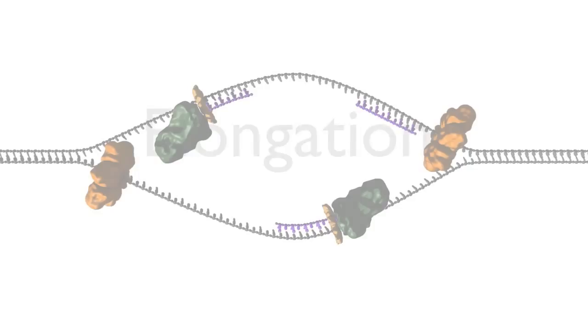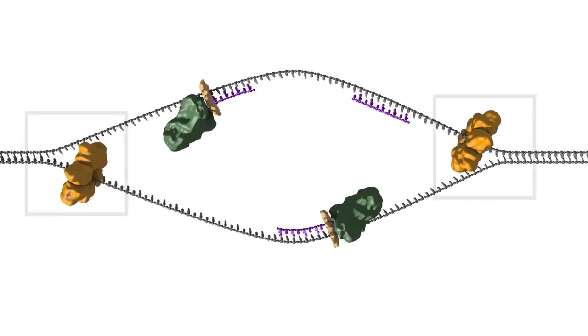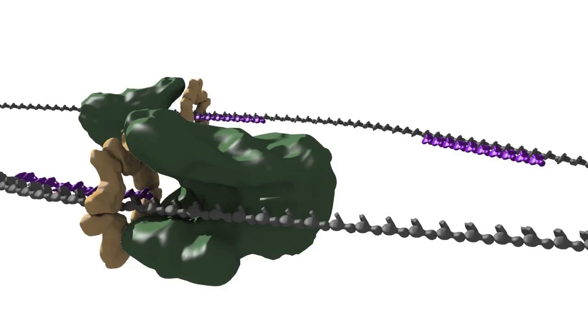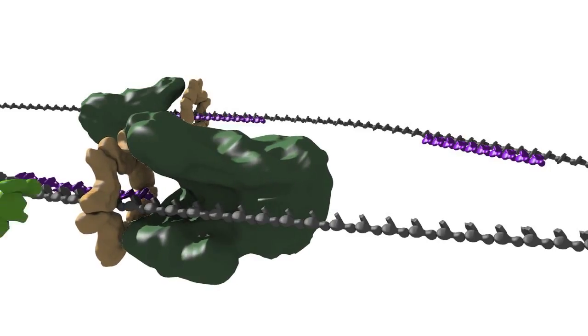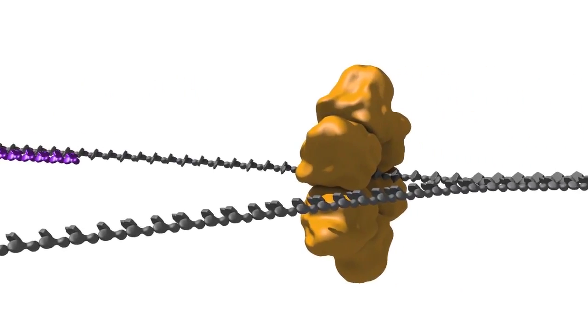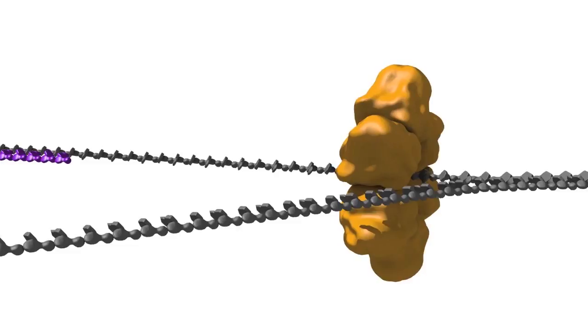During elongation, the replication bubble gets bigger as the helicases move apart, establishing two replication forks that move in opposite directions. The sliding clamp and polymerase unit at each replication fork moves along the DNA as the helicase unwinds the double-stranded DNA to expose single strands.